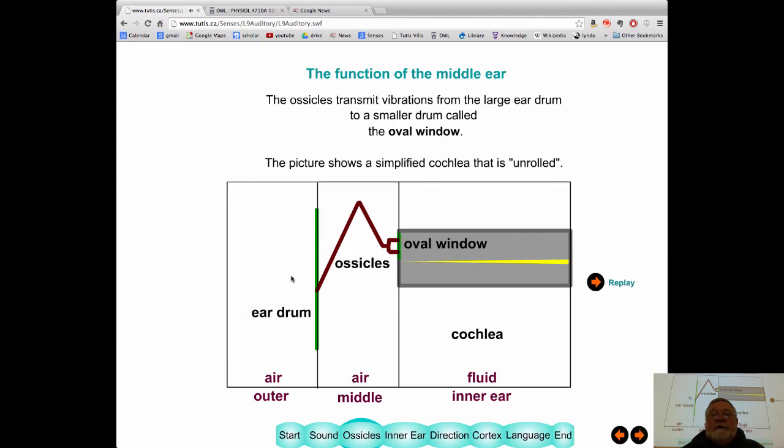So you saw there that what the ossicles did was transmit from the eardrum to the oval window. So this moves, that moves in turn. And I forgot to mention, but it's very important. This part here, the inner ear, is filled with fluid. Okay, so everything here is fluid-filled.